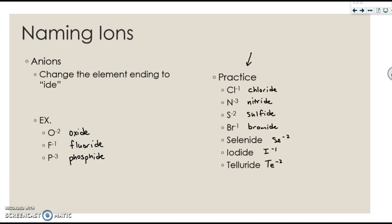Please check your answers. Chlorine is chloride, nitrogen is nitride, sulfur is sulfide, bromine is bromide. For the ones where you had to write the symbols, you had to find the element and use your periodic table to determine the charges. So Se negative 2, I minus 1, and Te minus 2.